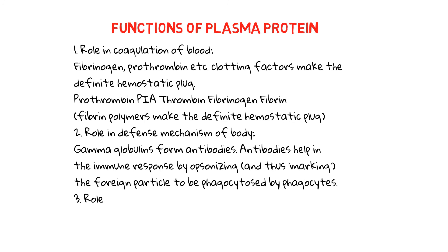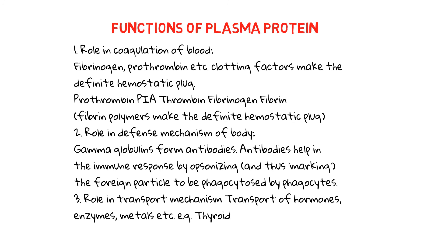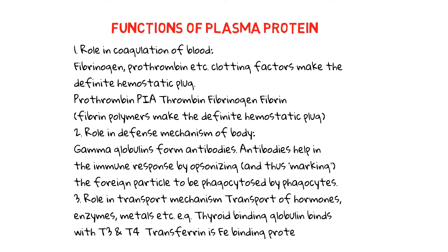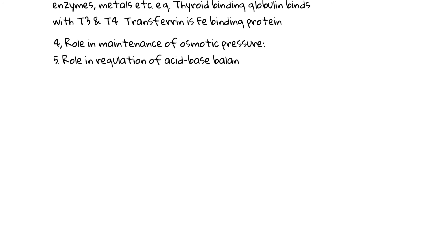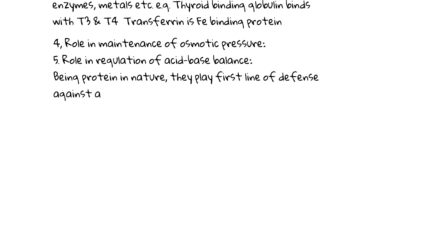No. 3, role in transport mechanism: transport of hormones, enzymes, metals, etc. For example, thyroid-binding globulin binds with T3-T4; transferrin is the iron-binding protein. No. 4, role in the maintenance of osmotic pressure. No. 5, role in regulation of acid-base balance. Being protein in nature, they play the first line of defense against acid-base imbalance as buffers.